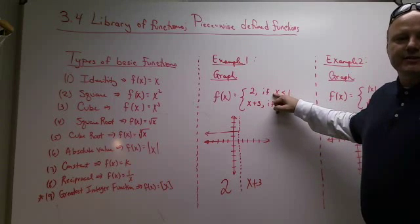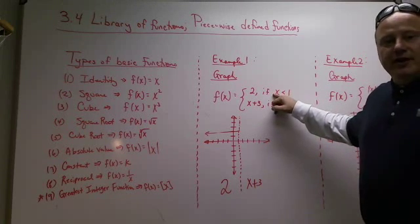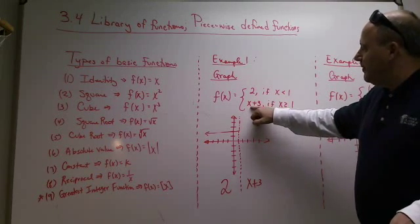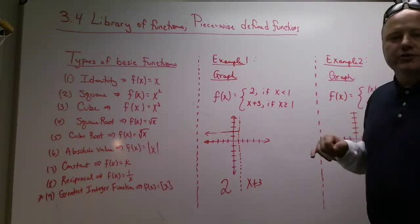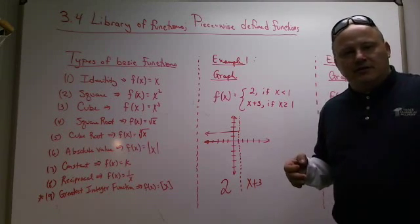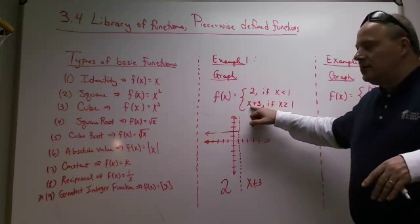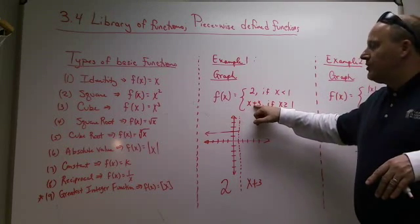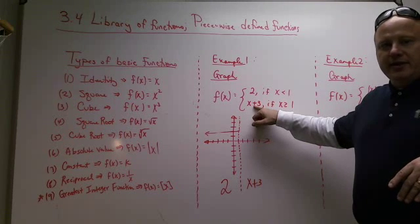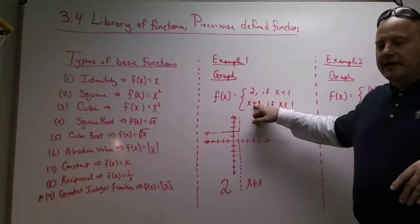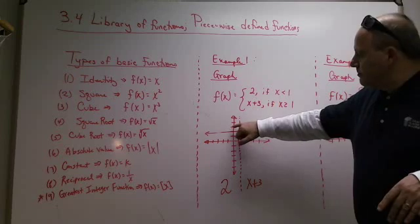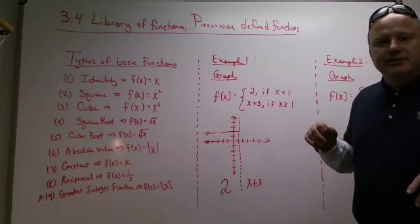But we have to cut it off here at x equals one because the problem says it's defined to be two only if the x's are less than one. If it's greater than one, it's something totally different. It's actually going to be defined as x plus three if the x-coordinates are greater than one. Now, x plus three is also a line. It's just not a horizontal line. It's actually a line that has slope of one. Technically, it has a y-intercept of three. But we won't see that y-intercept of three because it's only defined on this side of one. The y-intercept is on this side. So, we won't see that y-intercept actually.